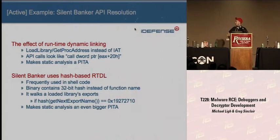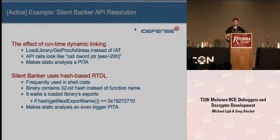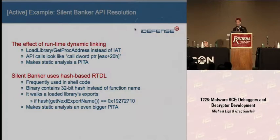The next example is also with Silent Banker. Silent Banker uses what's known as runtime dynamic linking. One of the first and easiest things to determine malware capabilities is by looking at the import address table — if it imports URLDownloadToFile, we can assume it downloads files off the internet. But if we don't have that, it's much harder. What malware will do is use runtime dynamic linking, calling LoadLibrary on the DLL and then calling GetProcAddress to find the function address. But the problem is that the URLDownloadToFile string is still compiled in the binary. So Silent Banker uses a hash-based import address table resolver, similar to what you might see in shellcode.